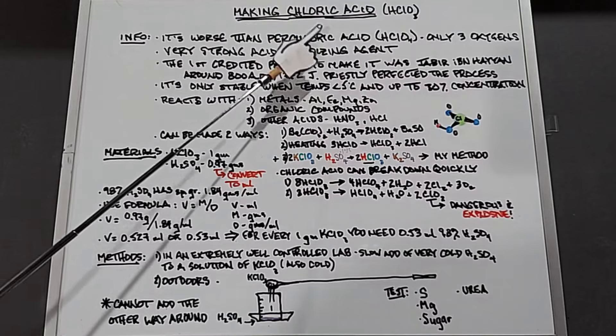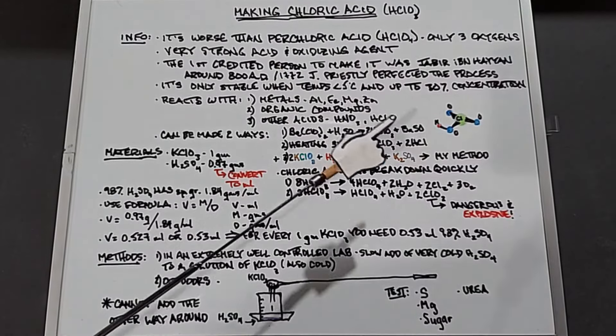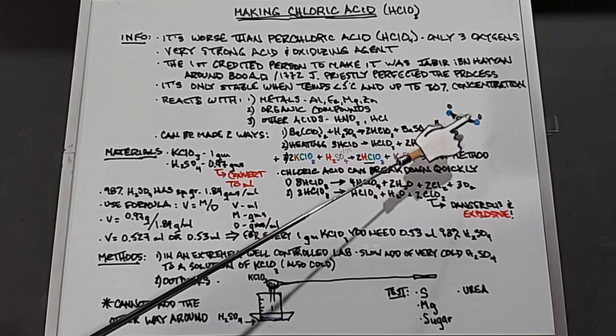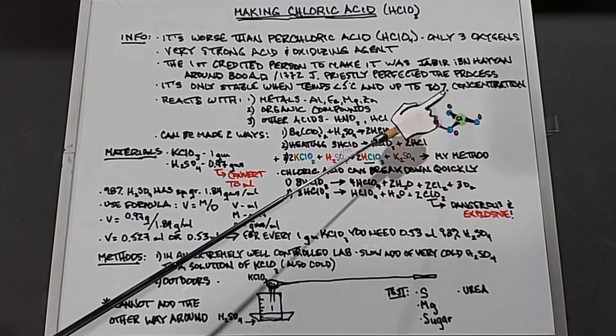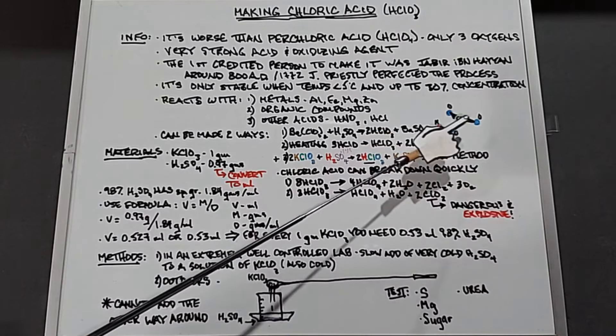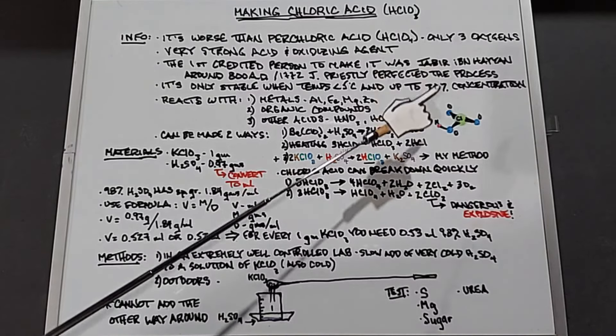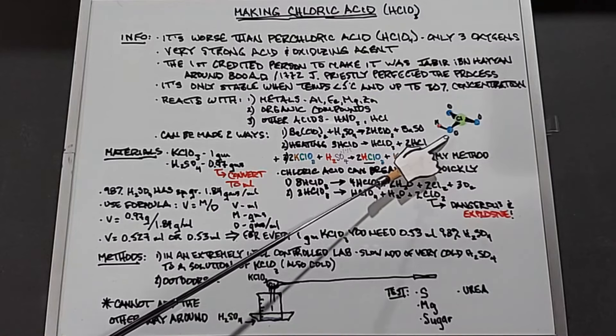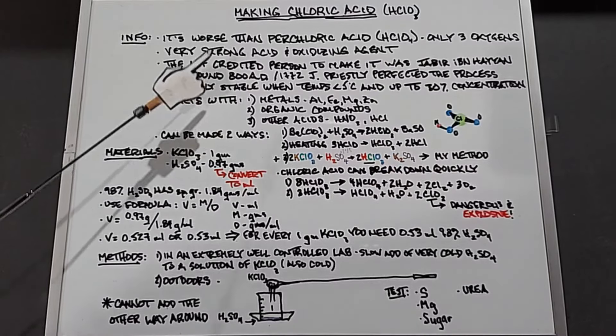If we look at this diagram here, we have one chlorine atom in the middle with three oxygens evenly spaced around it. Each one of these bonds is not as strong as if there were a fourth one. The hydrogen in chloric acid is bonded to this outside oxygen right here.